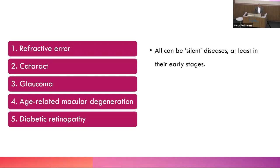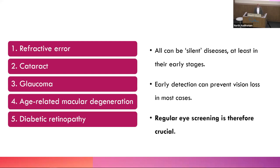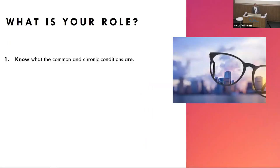These conditions can all be silent diseases, at least in the early stages, so patients often won't know that they've got them. In primary healthcare we need to be aware that these are the common eye conditions, especially if there's a family history. Family history will give you more information than asking about vision loss in early stages. Early detection is the key to preventing vision loss, therefore regular eye screening is crucial - especially for 40-plus-year-olds.